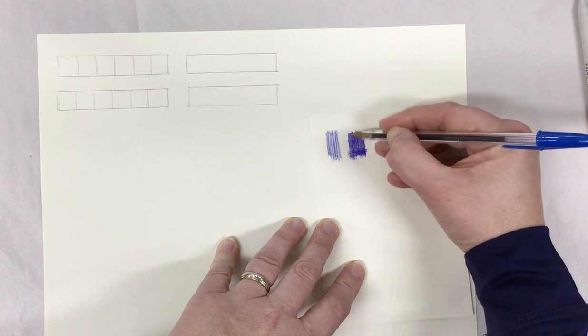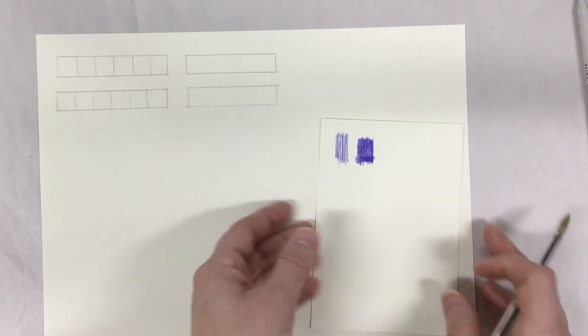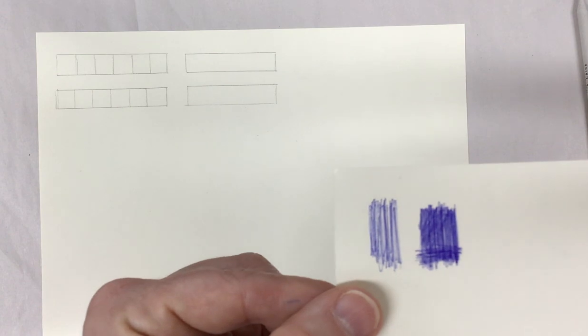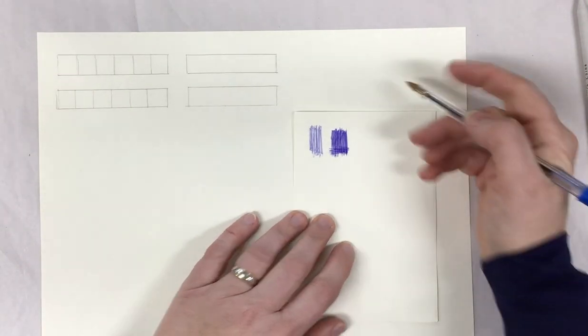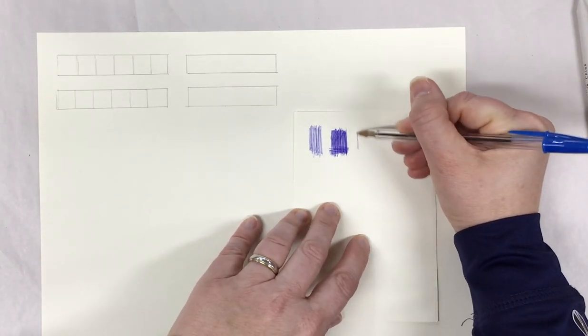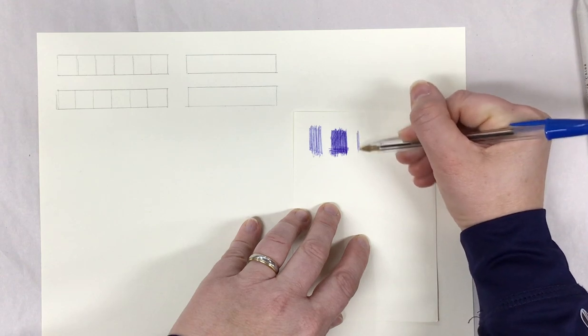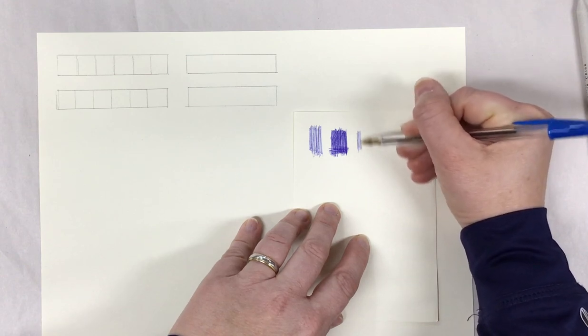So just a slight tilt will kind of fill in the tooth of the paper so that you don't see a lot of lines. But with a little bit of practice, you can get this to look really, really smooth.